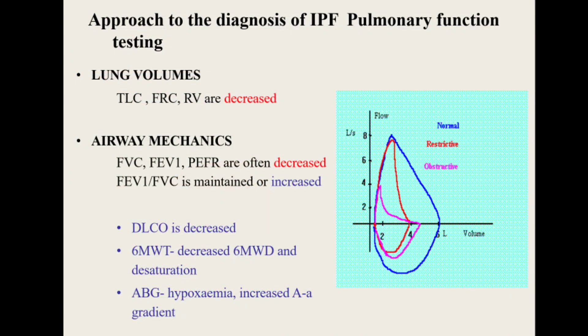After imaging, PFT and body plethysmography are done to assess pulmonary function. Residual volume, functional residual capacity, and total lung capacity are all decreased because the expansile capability of the lung is reduced due to fibrosis — a restrictive pattern. The graph is smooth with no obstruction, but volumes end at around 4 liters instead of the normal 6 liters. Diffusion capacity is decreased, measured by DLCO. The 6-minute walk test shows reduced distance covered, and patients desaturate on minimal exertion.